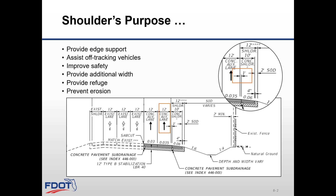Research has shown that strengthening the shoulder, designing a wider outside lane at 13 feet and striping the lane at 12 feet, the use of sealants, and use of tied concrete shoulders have proven beneficial.